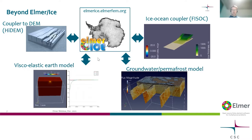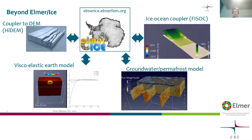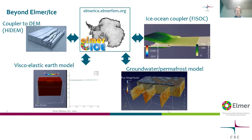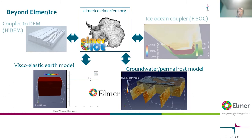Starting from Elmer Ice, which is a quite well-known application — I would say one of the most used ice sheet models on the planet — this is basically our spearhead in geophysical applications. We have different couplings: a discrete element model for calving, an ice-ocean coupler called FISOC by Rupert Gladstone, and what I'll focus on today: a viscoelastic earth model and a groundwater permafrost model implemented in Elmer.